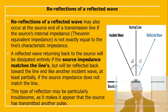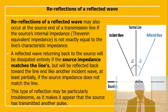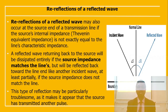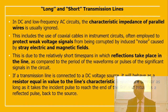Re-reflection occurs at the source end if the source's internal impedance is not exactly equal to the line's characteristic impedance — by Thevenin's equivalent impedance. A reflected wave returning to the source will be dissipated entirely if the source impedance matches the line impedance, but will be reflected back toward the line if it does not. This can be troublesome because it makes it appear that the source has transmitted another pulse.